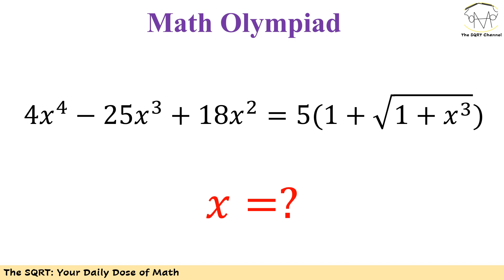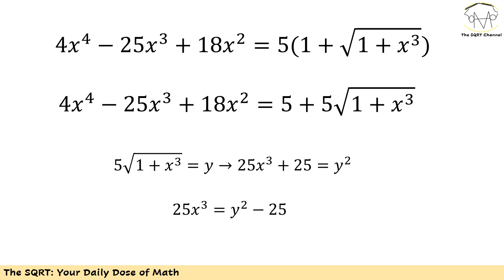Hello everyone, welcome to the security channel. In this video I'm going to talk about how to solve the equation we are seeing here. In this equation we have 4 times x to the power of 4 minus 25x cubed plus 18x squared equals 5 times (1 plus radical(1 + x cubed)). We are going to find all possible x values belonging to real numbers and see how to tackle this challenging problem.